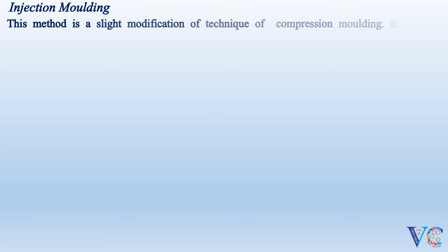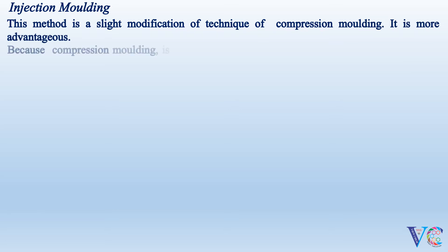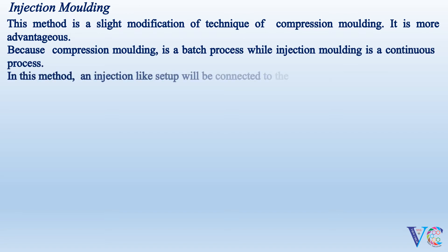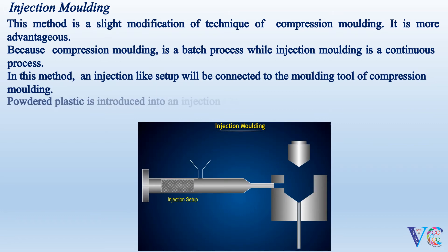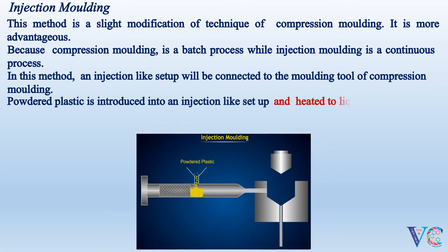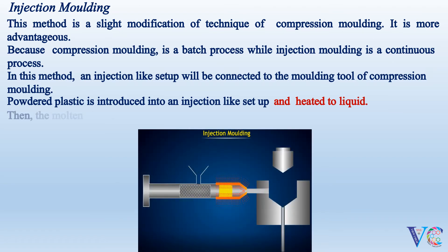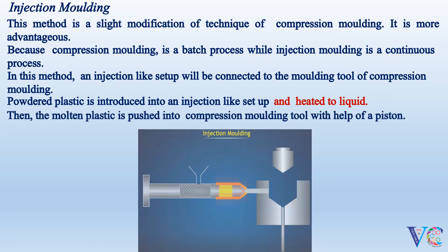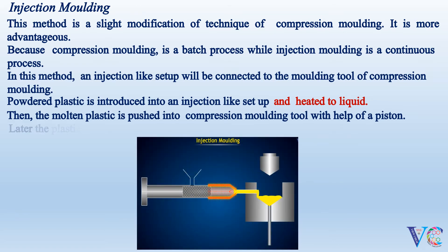Injection Molding is a slight modification of the technique of Compression Molding and is more advantageous because Compression Molding is a batch process while Injection Molding is a continuous process. In this method, an injection-like setup is connected to the molding tool of Compression Molding. Powdered plastic is introduced into the injection-like setup, heated to liquid, and then the molten plastic is pushed into the Compression Molding tool with the help of a piston. Later, the plastic is molded to the desired shape.